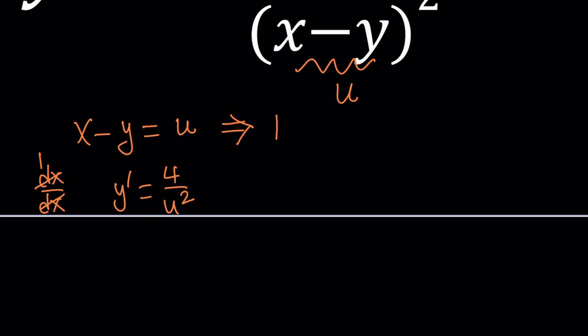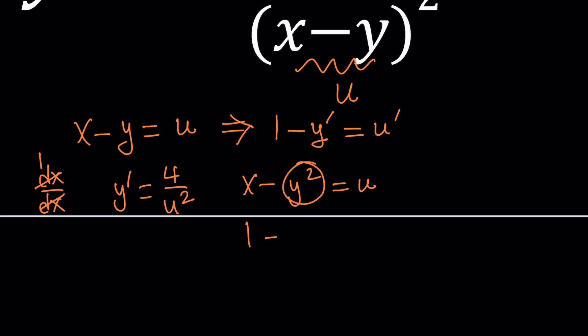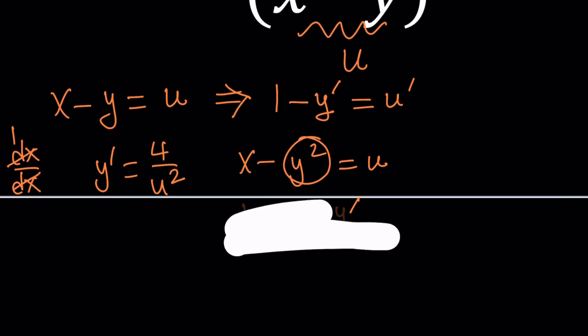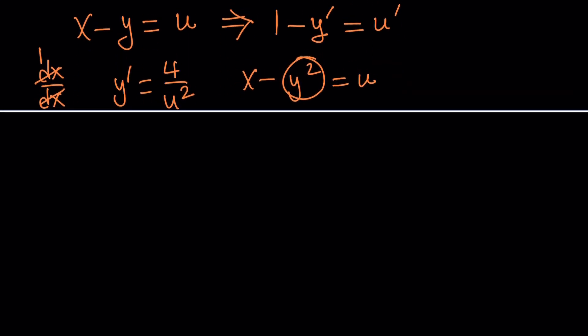So this becomes 1 minus the derivative of y, which is just y prime, and the derivative of u is u prime. Now, what would happen if you had something like y squared as our u and you were trying to differentiate? You will get 1 minus — to differentiate y squared, first you're going to treat it like differentiating with respect to y first, giving 2y. And then, to correct it, you would need to multiply by the derivative of y with respect to x, which is y prime. That's how it works with different types of functions you may encounter.